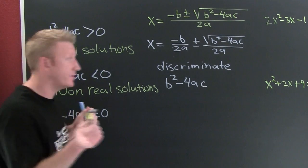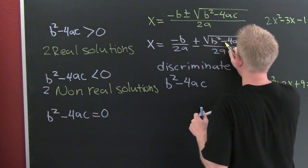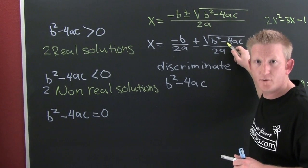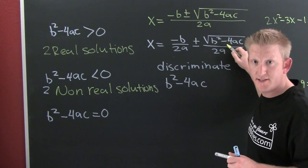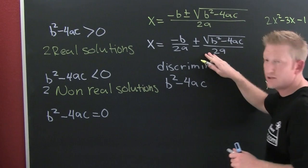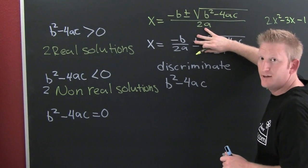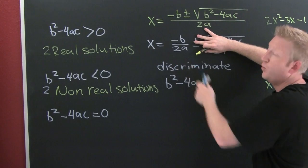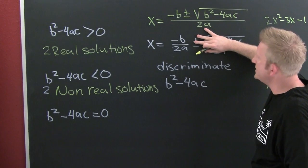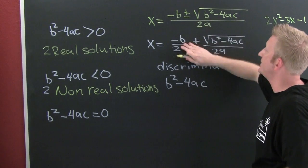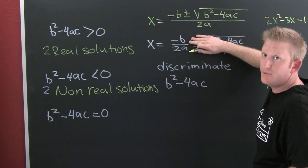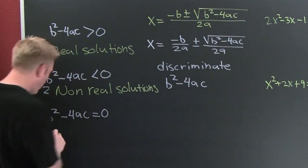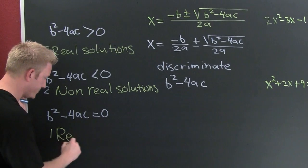Let's look at our third case: what if the discriminant is zero? Can you take the square root of zero? Yes — it's zero. That entire term disappears, and what you're left with is only one real number. It's not going to have the plus and the minus — it's going to be one real solution.